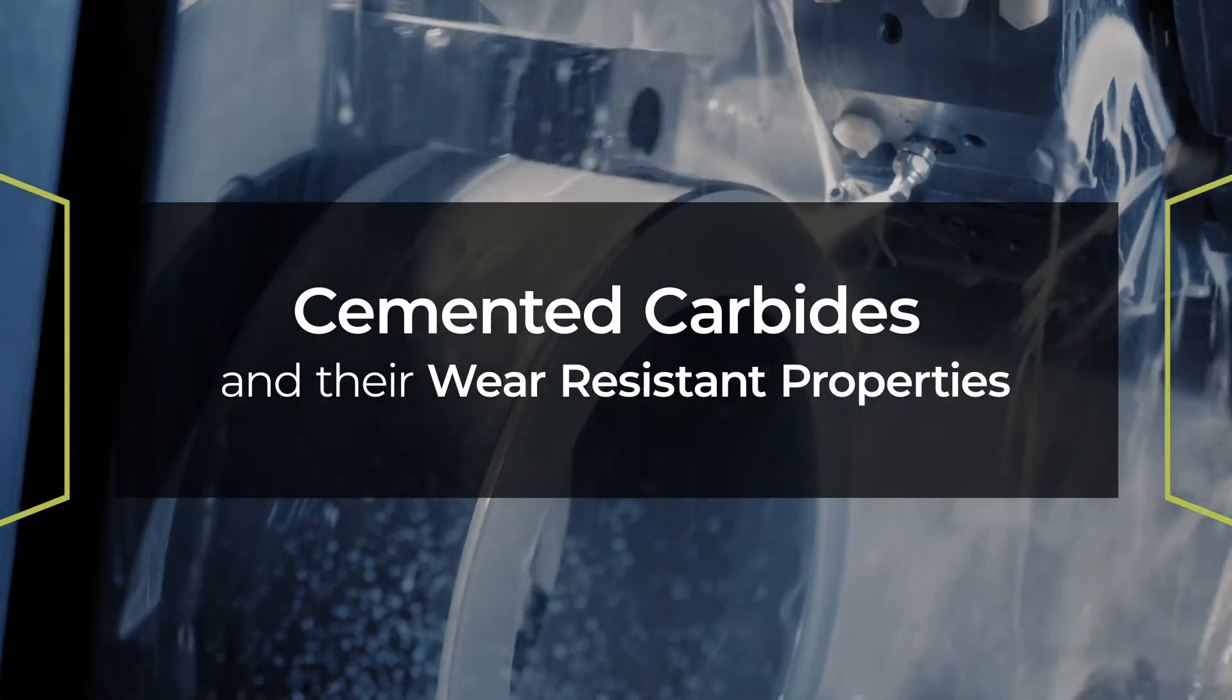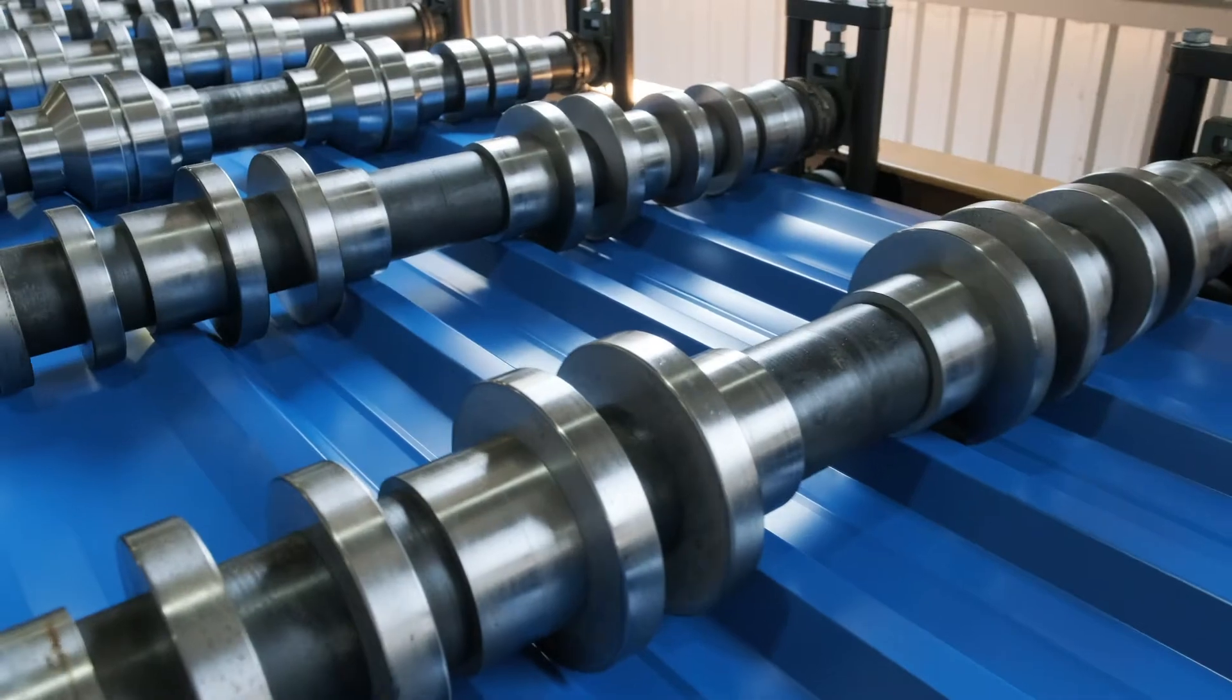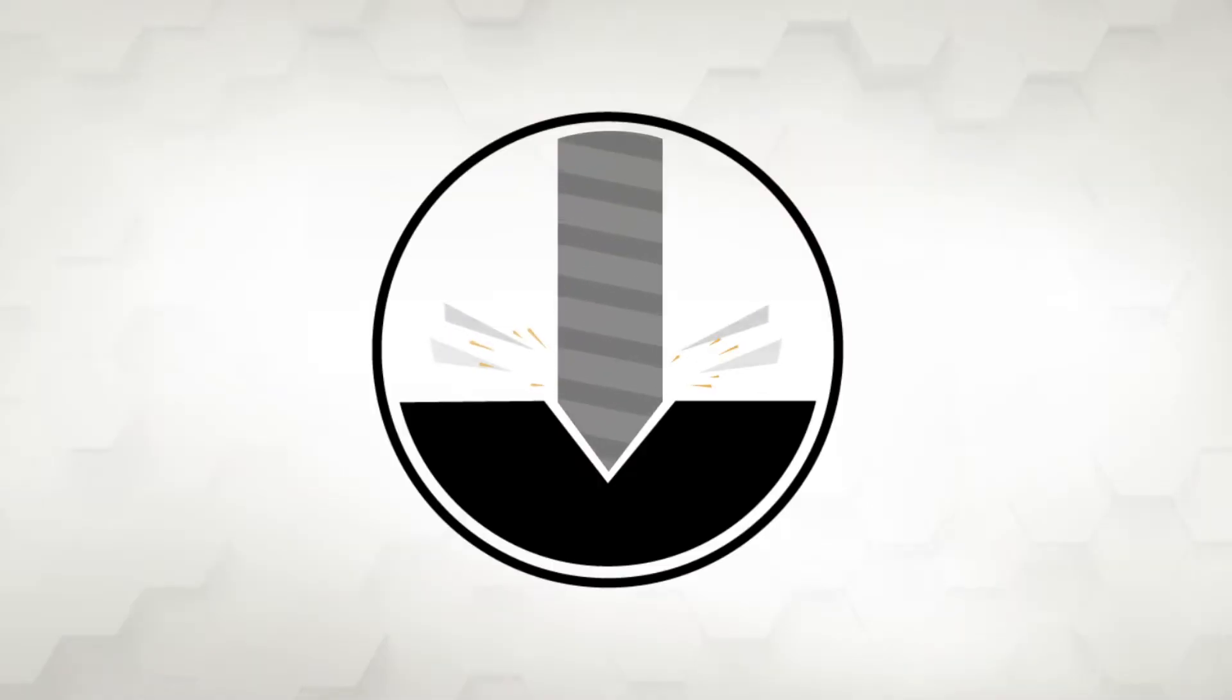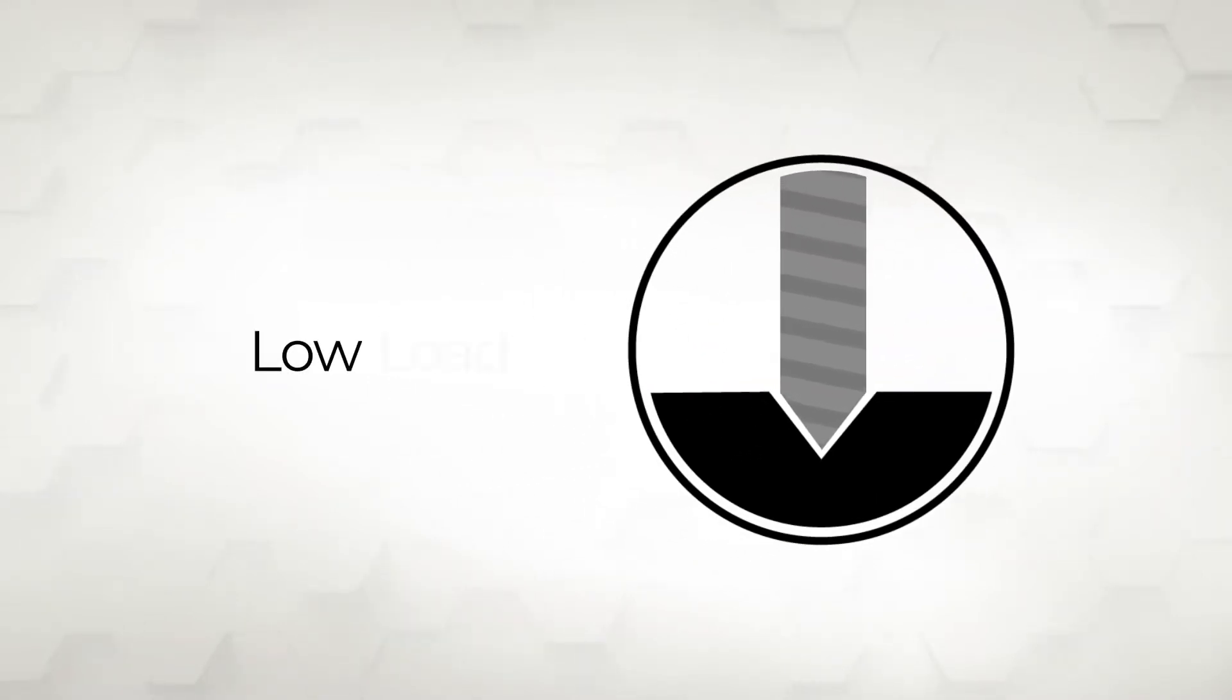The most important characteristic of cemented carbide is its wear resistance as it relates to surface phenomena. When two surfaces slide against each other, material will be removed from both surfaces. At a low load, this loss of material, or attrition, results from loss of single grains or parts of single grains.